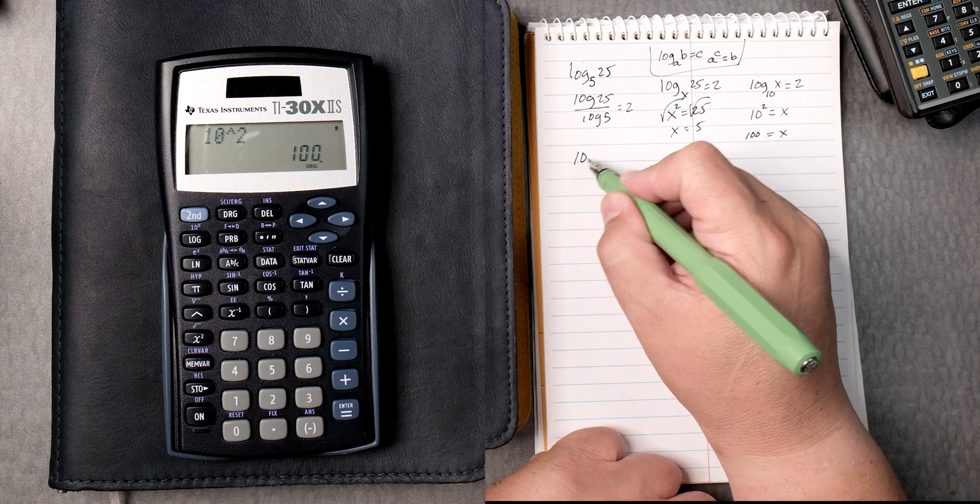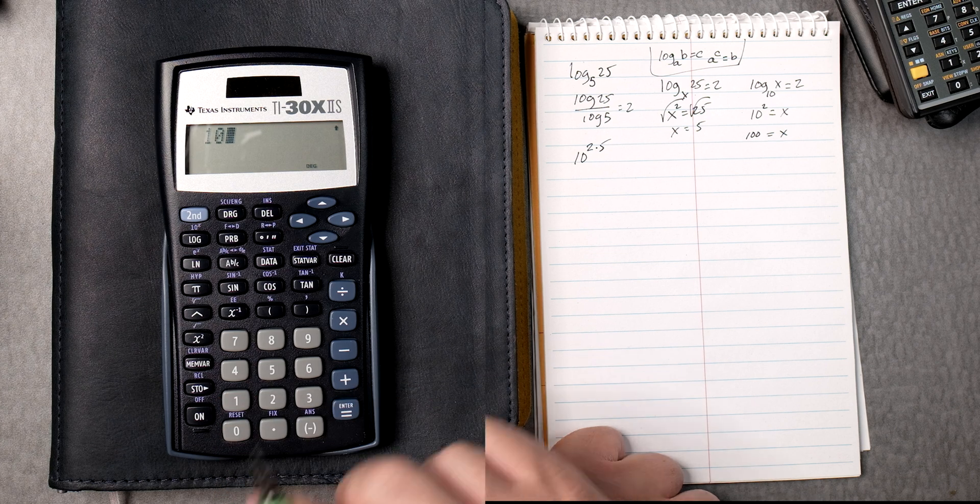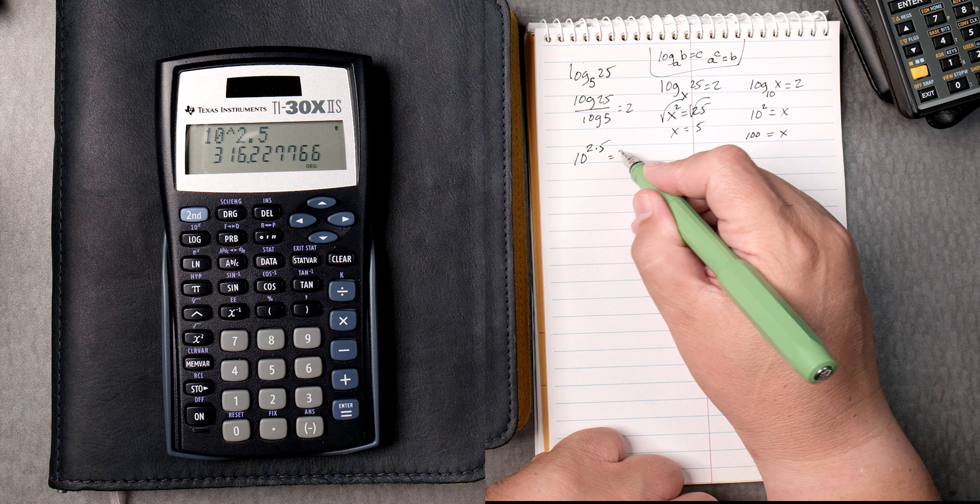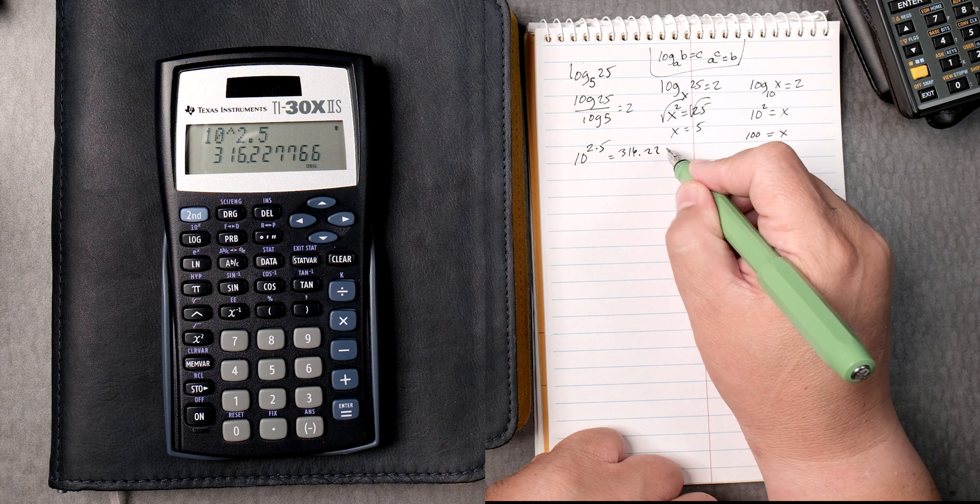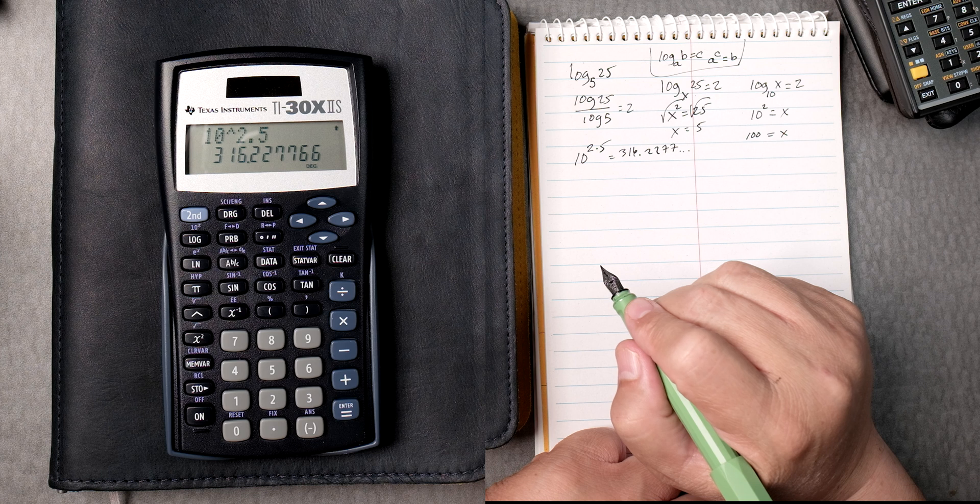Let's do some antilogs, like 10 to the 2.5. 10, carat, 2.5, equals, and that's going to give you 316.2277, and so forth.